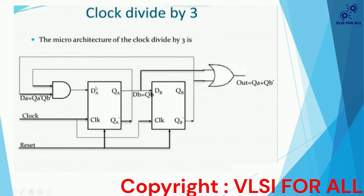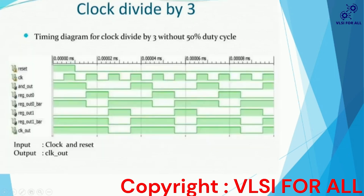In the circuit we use two D flip-flops. The output of the AND gate is given as the input DA. QA and QB are combined together through logic gates to achieve approximately 75% duty cycle in the basic configuration.